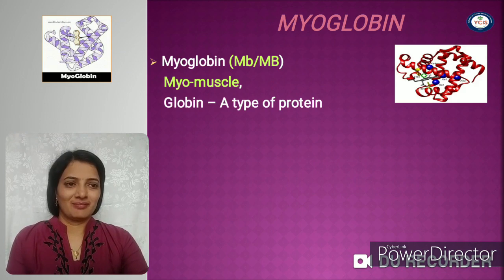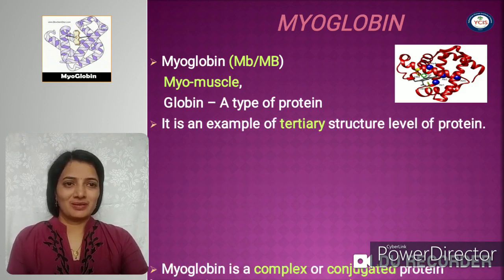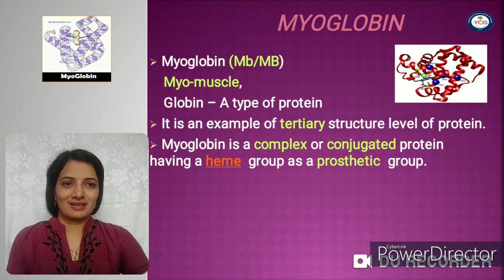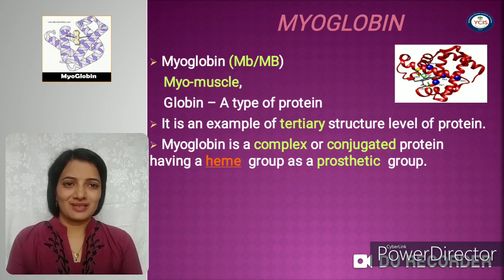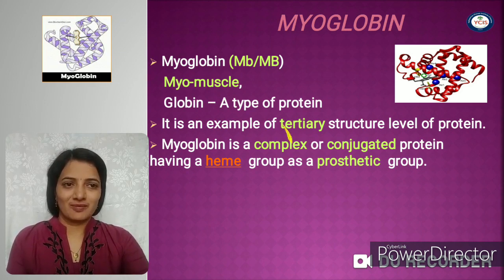Myoglobin: 'myo' means muscle, 'globin' means a type of protein. Its short form is capital M, small b, or capital M, capital B. It is an example of the tertiary structural level of protein.